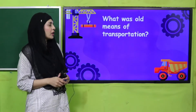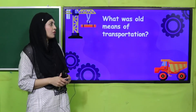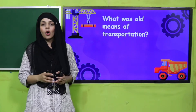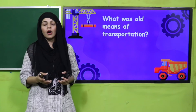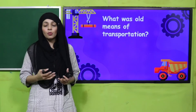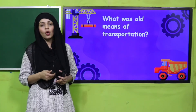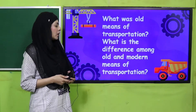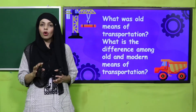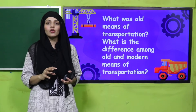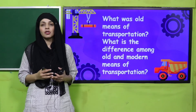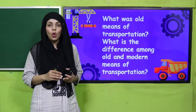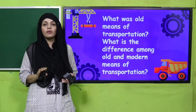Let's quickly recap what we did in the previous lecture. What were the old means of transportation? Horse cart, ox cart, and vehicles led by humans. These were the ancient or old means of transport. The difference between old and modern transportation: the old means were led by horses or men and were slow, while modern transportation is led by machinery and is fast.